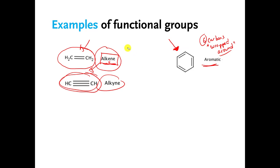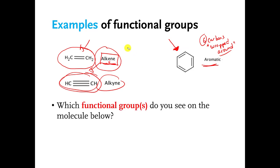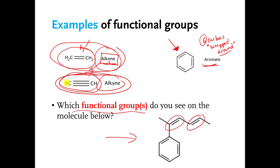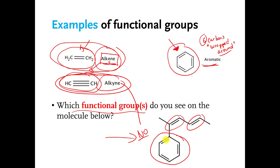For example, on an exam, I might show you a molecule and ask what functional groups it has. Does it have any alkene functional groups? Yes — there are a couple right there. Does it have any alkyne functional groups? No — there are no carbon-carbon triple bonds in that molecule. Does it have an aromatic functional group? Yes, it does — right there.